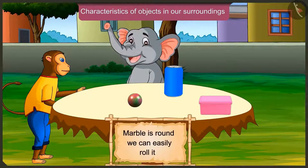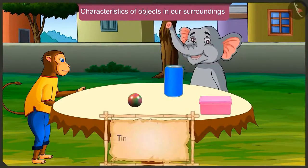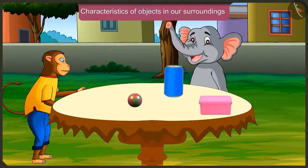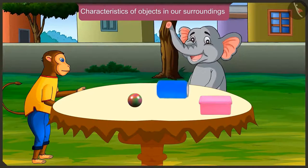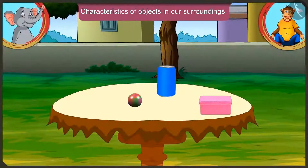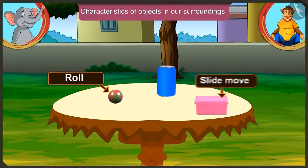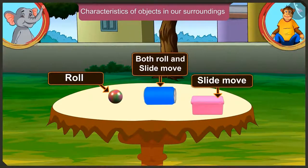This marble is round — we can easily roll it. And this tin can is cylindrical. Cylindrical objects have a flat surface on top and also on bottom, so we can slide them. But since their side surface is curved, we can also roll them. You have understood very well which objects can be rolled, which can be slid, and which can be both rolled and slid.